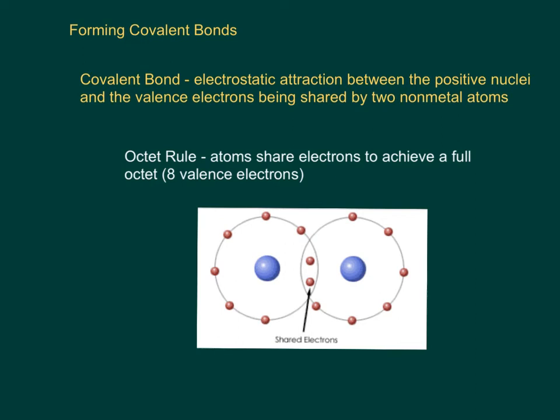In the last chapter we talked about ionic bonds, and in this chapter we're going to talk about covalent bonds. A covalent bond is an electrostatic attraction, just like the ionic bond was, between a positive and a negative. It's between the positive nuclei and the negative valence electrons that are being shared. In an ionic bond, the metal transferred an electron to the non-metal, but in a covalent bond, you have two non-metals and they're going to share electrons.